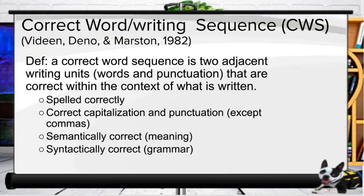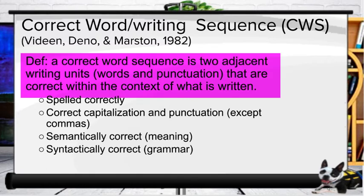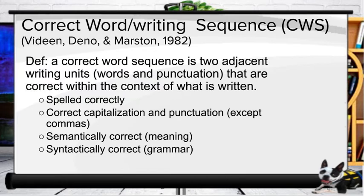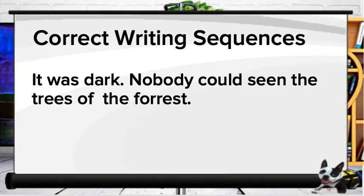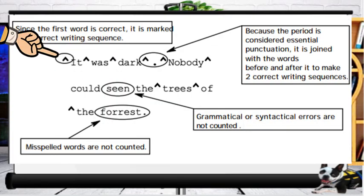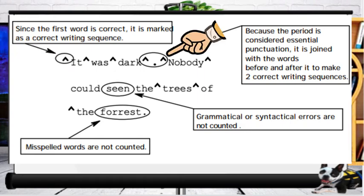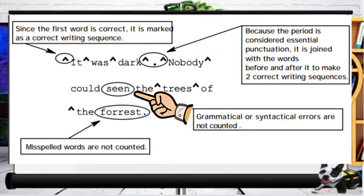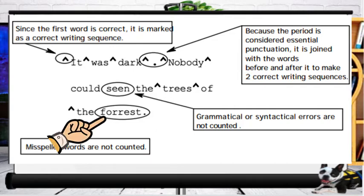For correct writing sequence (CWS), we look for a sequence of at least two adjacent writing units — words or punctuation — that are correct within the context of what's written. The sequence needs to be spelled correctly, have correct capitalization and punctuation (except for commas), and be semantically and syntactically correct. A caret is used to mark the presence of a correct writing sequence. Since the first word is correct, it's marked as a correct writing sequence. The period is considered essential punctuation and is joined with the words before and after to make two correct writing sequences. Grammatical or syntactical errors and misspelled words are not counted.